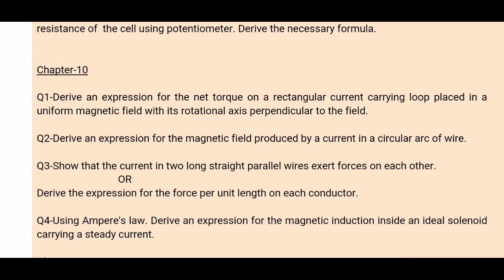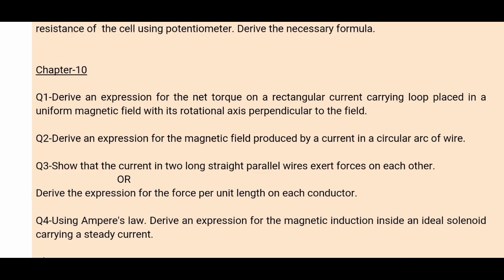Question number 4: using Ampere's law, derive an expression for the magnetic induction inside an ideal solenoid carrying a steady current. You derive the magnetic field due to a solenoid, and the answer is B = μ₀ni, where n is the number of turns per unit length. The answer is on page 246 to 247. These are the most important derivations from these chapters.